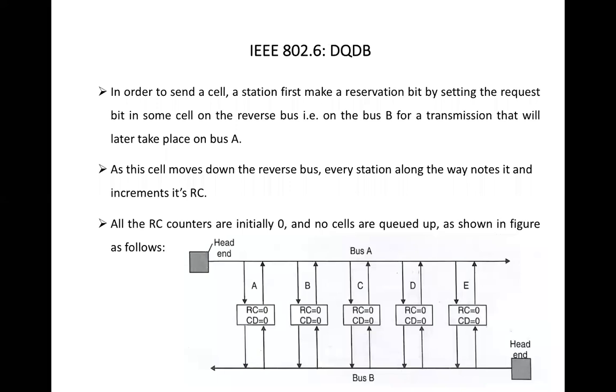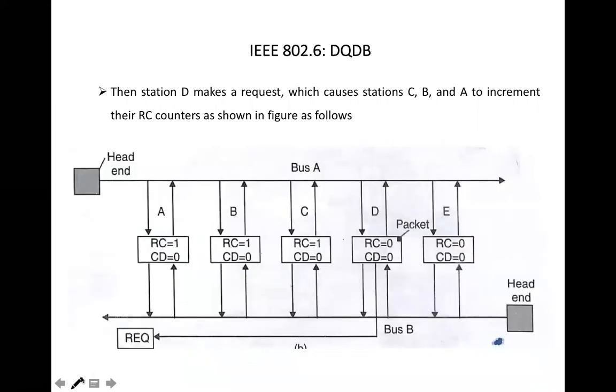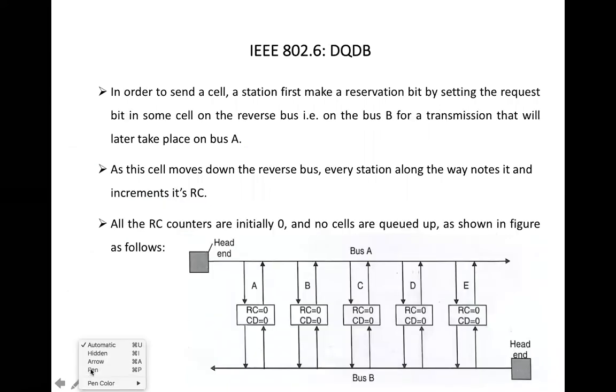Now let's understand the entire concept from a scenario. Let's assume that at time T0, no station has data to transmit. You can see at time T0 that we have 5 stations: station A, B, C, D and E. At time T0, initially, request counter and countdown counter will be 0. Initially, the value of RC and CD will be set to 0.